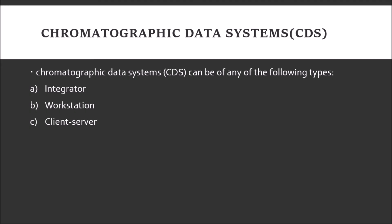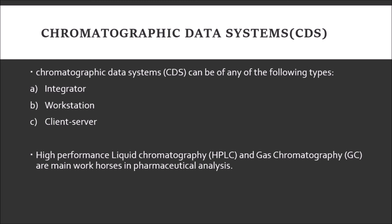A chromatographic data system (CDS) can be of three types: integrator, workstation, and client-server. The integrator is a single-user, single-instrument data acquisition system. A workstation may be single or multiple user with single-instrument control. A client-server system supports multiple users and multiple instruments. High performance liquid chromatography (HPLC) and gas chromatography (GC) are the main workhorses in pharmaceutical analysis.